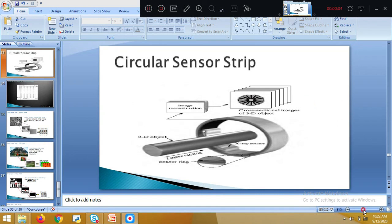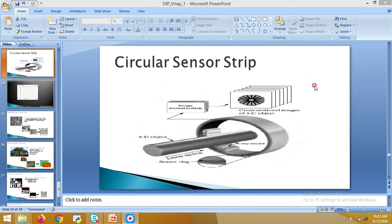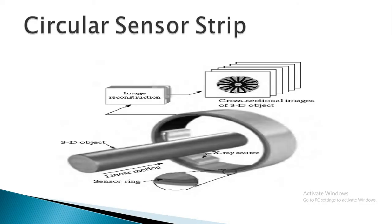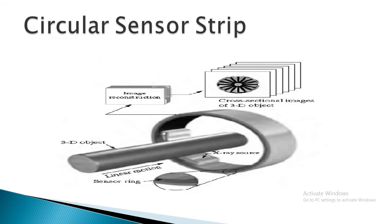In continuation with the previous part of the lecture, we saw how your linear strip would operate. In continuation with that, we will try to check out how our circular strip will operate. We saw in the previous class that a single sensor generates a 2D image. Now we will go ahead and see about your circular sensor which will be generating a 3D image.